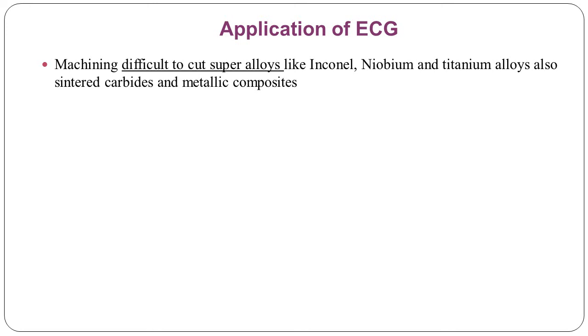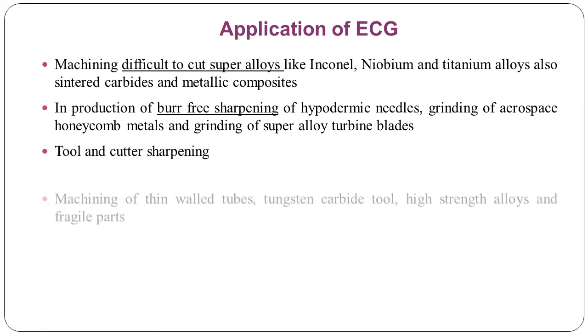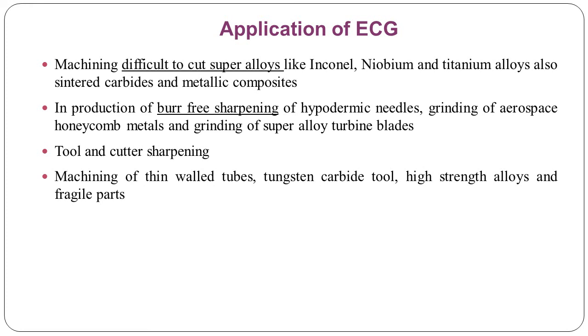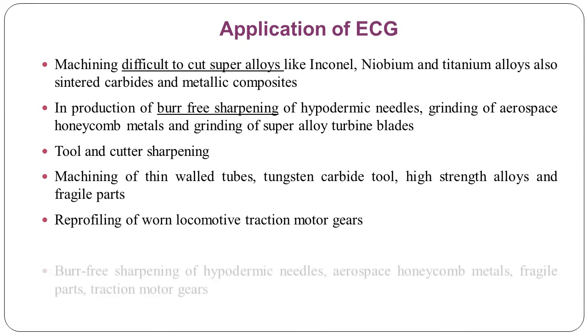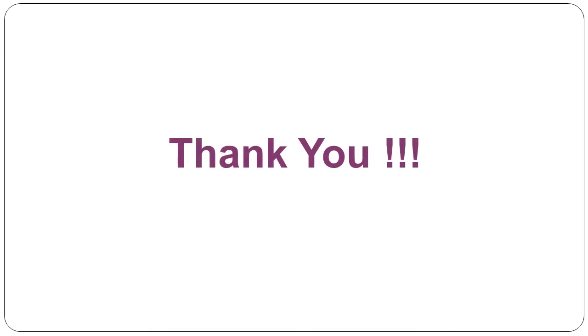Applications of ECG include: machining difficult-to-cut super alloys like Inconel, niobium, and titanium alloys, as well as sintered carbides and metallic composites; burr-free sharpening of hypodermic needles; grinding of aerospace honeycomb metals and super alloy turbine blades; tool and cutter sharpening; machining of thin-wall tubes, tungsten carbide tools, high-strength alloys, and fragile parts; reprofiling of worn locomotive traction motor gears. This is all about the working mechanism of STEM — Shaped Tube Electrolytic Machining — and ECG — Electrochemical Grinding — along with their applications. Thank you for listening.